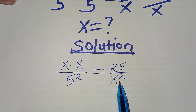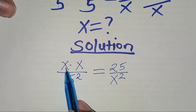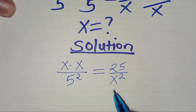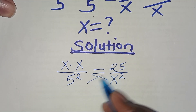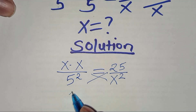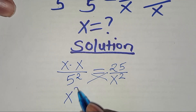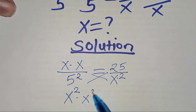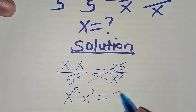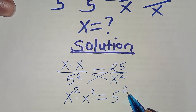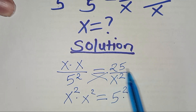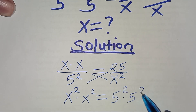Now here we have x times x, which is x squared. If we cross multiply, we'll have x squared times x squared, which is equal to 5 squared multiplied by 5 squared, which is 25, the same as 5 to the power of 2.